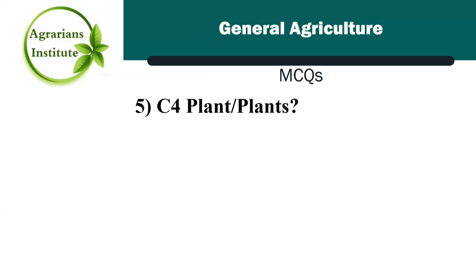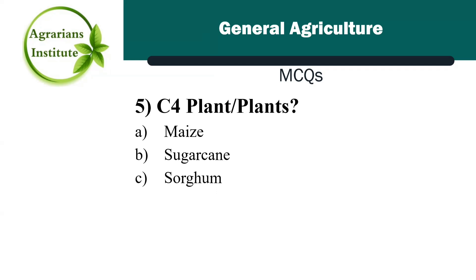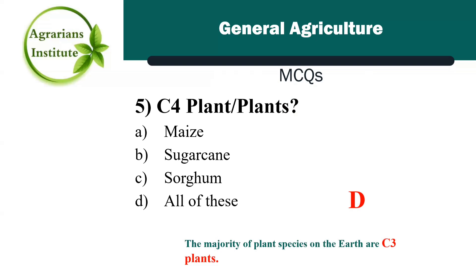Next MCQ: C4 plants — Option A is maize, Option B is sugarcane, Option C is sorghum, Option D is all of these. The correct answer is D, all of these. Sorghum, sugarcane, and maize are all C4 plants. The majority of plant species on earth are C3 plants — almost 85% of plants are C3 plants.